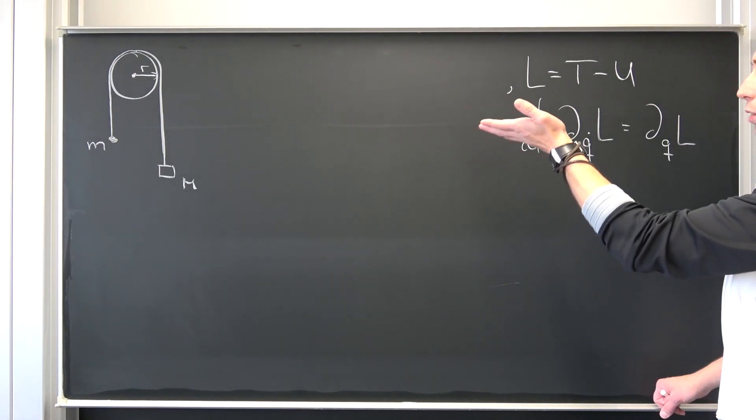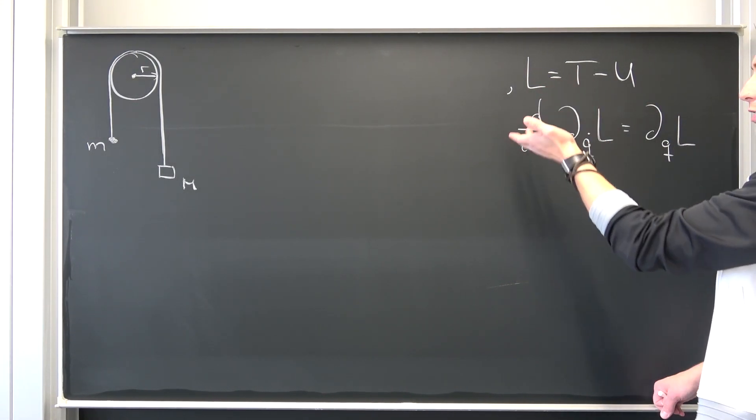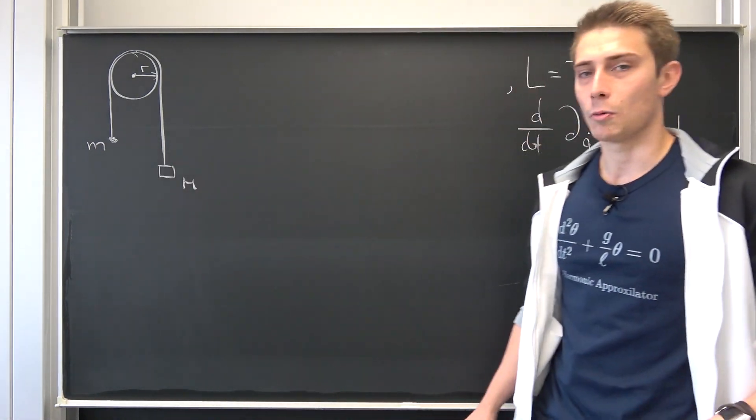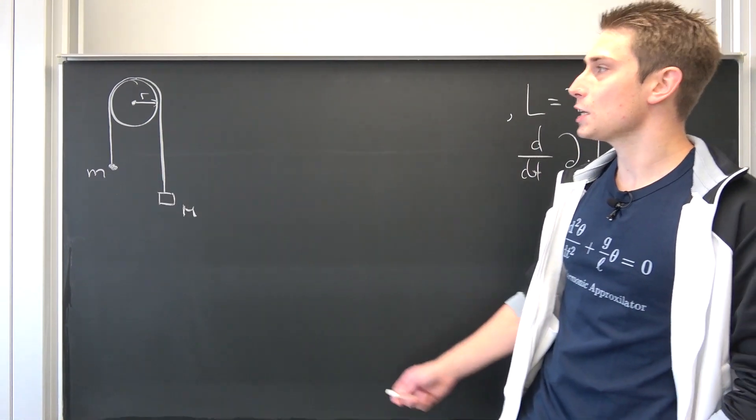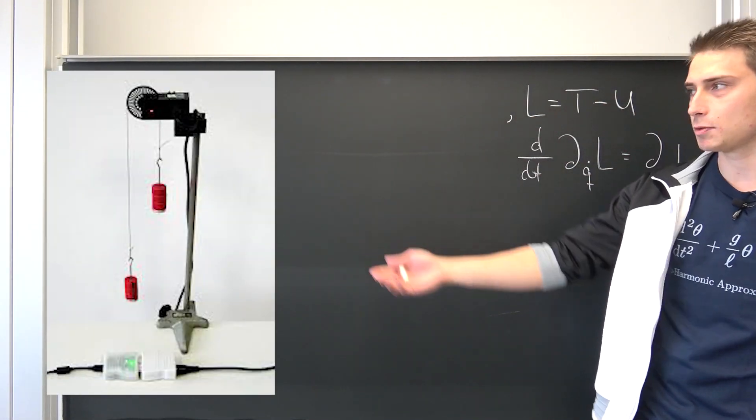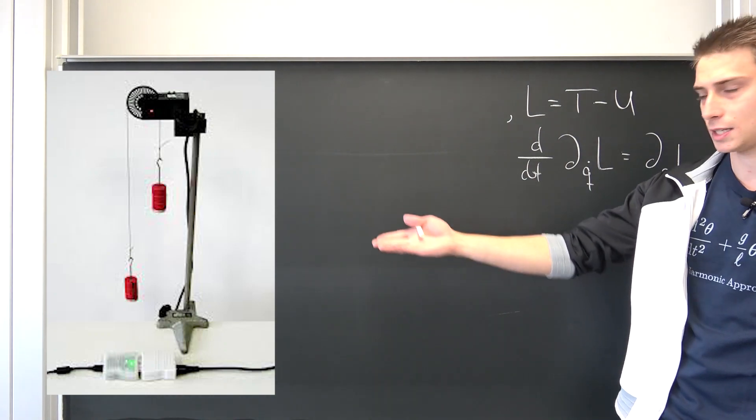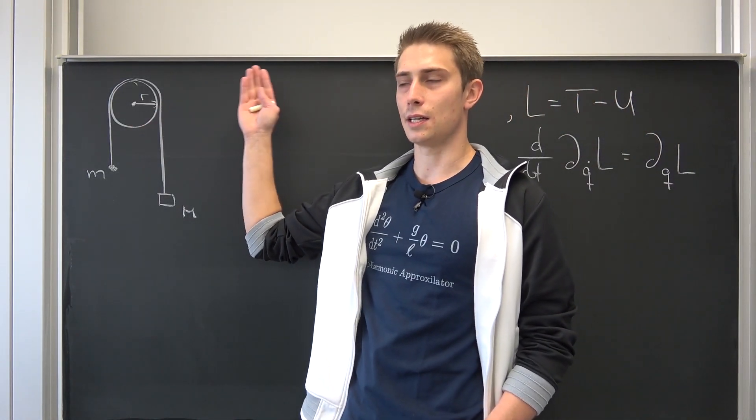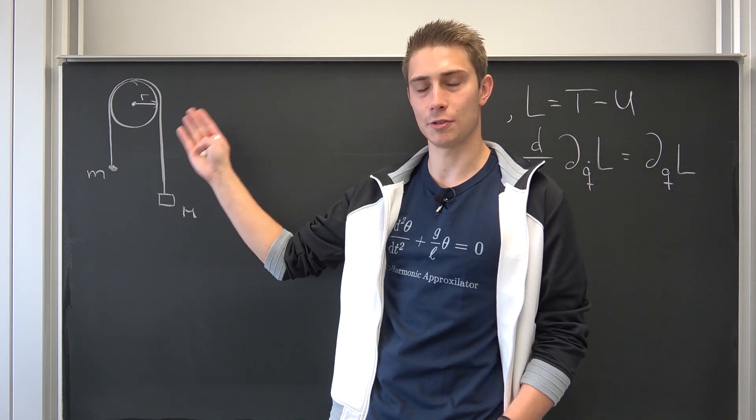Just like with the last one, here's our Lagrangian and we have our Euler-Lagrange equations. And this time, Atwood machine. What we have right here is basically a type of pulley. Maybe there's a picture of an actual Atwood machine that you can see right here. This thing has its purpose in physics, definitely.